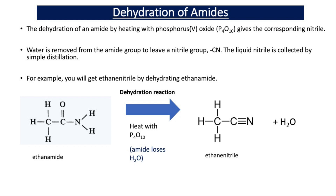Now we'll look at the reactions of amides. The first reaction is dehydration of amides to form nitriles. If you heat an amide with phosphorus pentoxide (P4O10), it gives the corresponding nitrile — water is removed from the amide group, leaving a C≡N nitrile group. The liquid nitrile is collected by simple distillation. For example, heating ethanamide with P4O10 gives ethanenitrile, CH3C≡N.